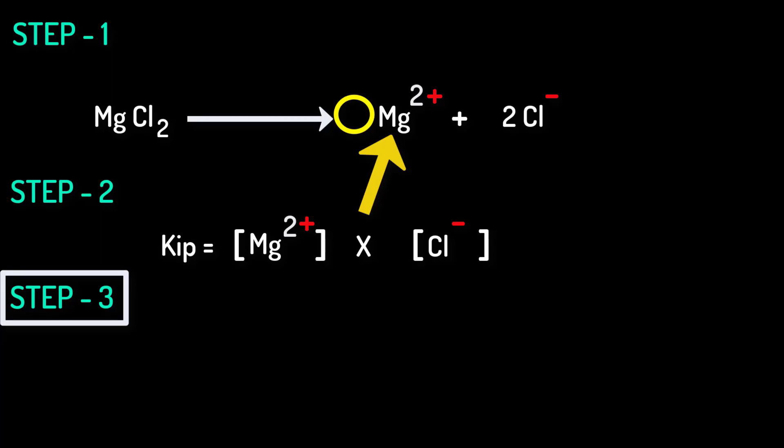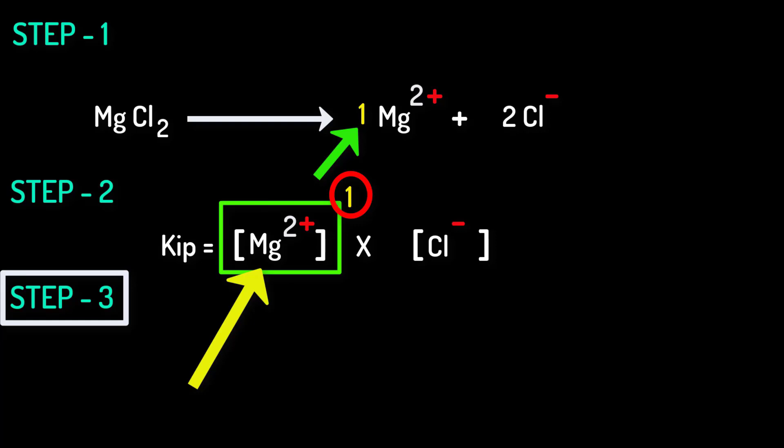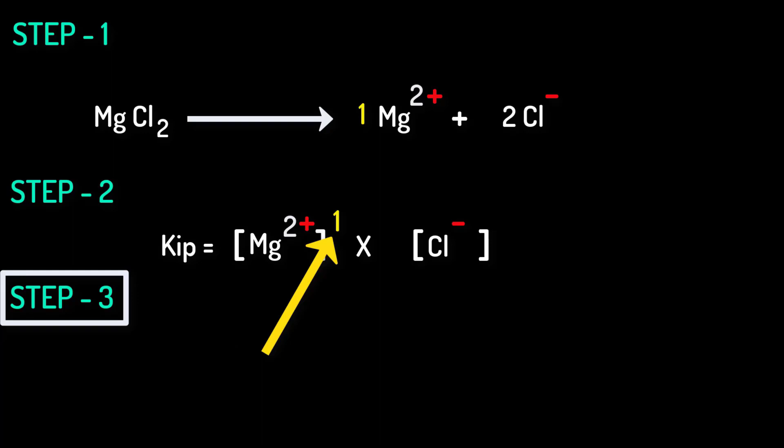See in front of this magnesium ion there is no coefficient here. That means we can assume that the number 1 is here in front of this magnesium ion. We know that raising something to the power of 1 doesn't change its value. So it is not necessary to raise to the power of 1 here.